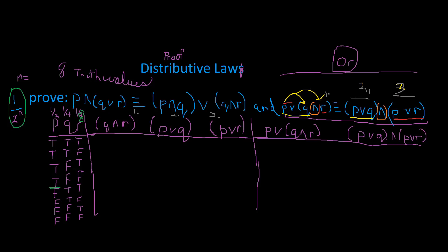Right here, we're going to fill in Q and R. For Q and R (an AND statement), we need both to be true for the statement to be true. So the first row is true. You can see the following three are false because they're not both true. Then following the pattern: true, false, false — that's true, false, false, true, false, false.